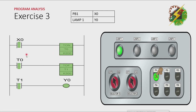Because T0 is activated, all the contacts of T0 will change. Because this one is normally open, it will close, and that will give signal to our timer here. And because this one is a timer of delay, it will immediately activate. Timer 1 here will change, and this one will give signal to Y0. Because Y0 is activated, lamp 1 will be turned on.